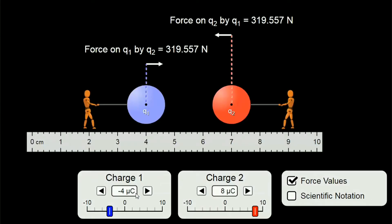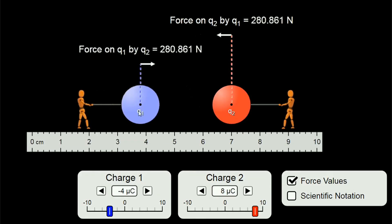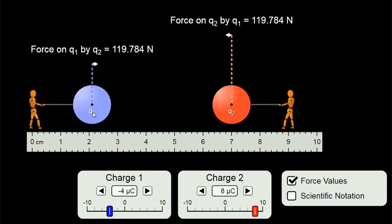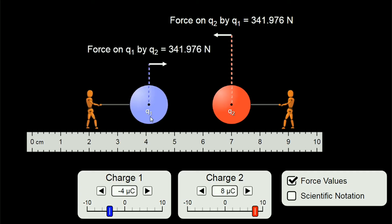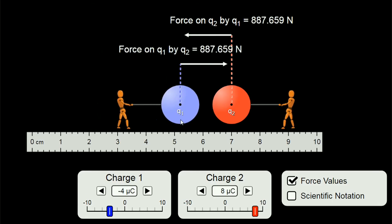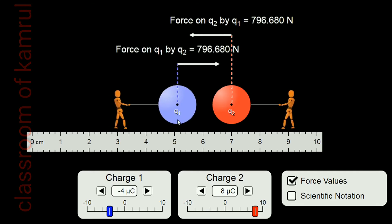Look at this animation carefully. In this animation, the blue one is negative charge and the red one is positive charge. When they come closer, there is an attraction force between them and the force increases. But when the charges go further, their attraction force decreases. When they come closer, attraction increases, and if they go further, attraction decreases.